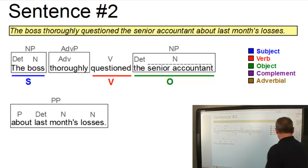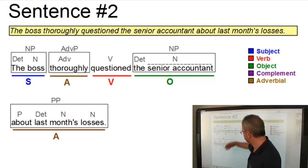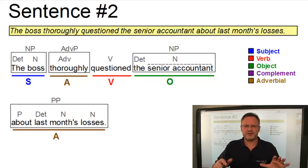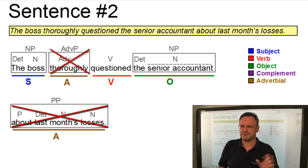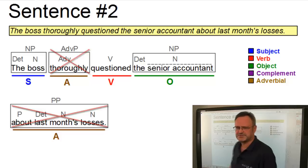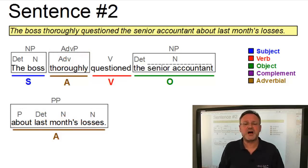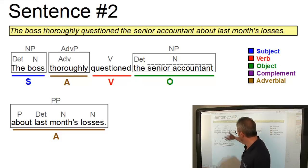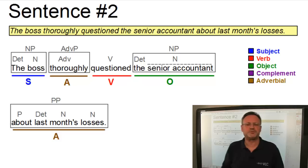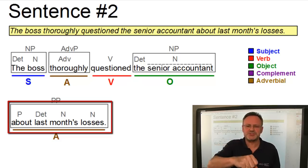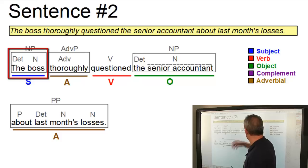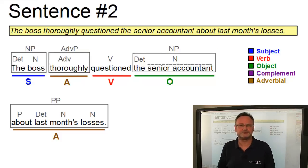Finally, we have two adverbials. A simple adverb thoroughly and a prepositional phrase. Both adverbials are optional. So we could have a sentence without them. The boss questioned the senior accountant. And also the adverbials are mobile. So a suitable sentence which shows the mobility of these adverbials could be about last month's losses. The boss questioned the senior accountant thoroughly. Slight meaning change though. But it works. So that's it.